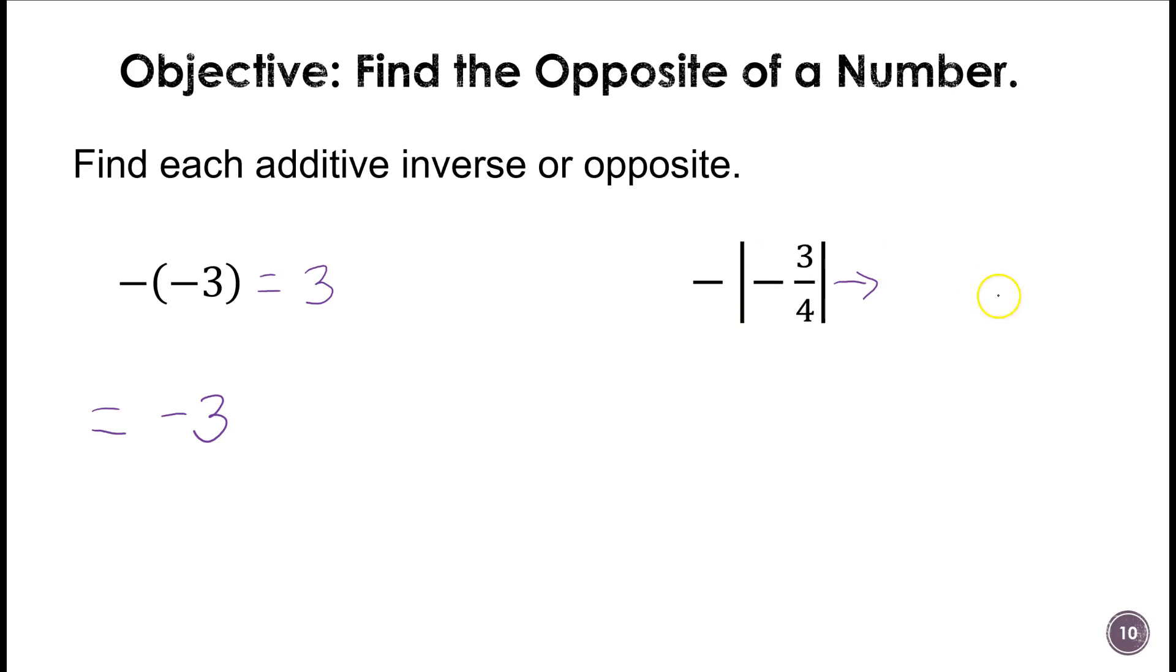So first we evaluate and get that 3 fourths is positive, or the absolute value of negative 3 fourths would be a positive 3 fourths, but then this negative on the outside has to stay. So the inverse or the opposite of negative 3 fourths would be positive 3 fourths, and that's the rest of the lesson for section 1.5.